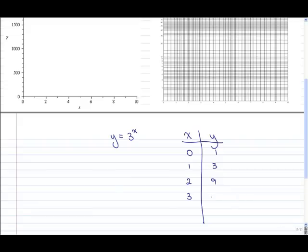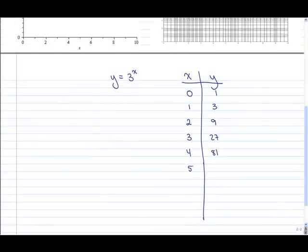When x is 3, y is 27. When x is 4, y is 81. When x is 5, y is 243. When x is 6, y is 729. When x is 7, y is 2,187. So you can see as x gets larger, y gets drastically larger.